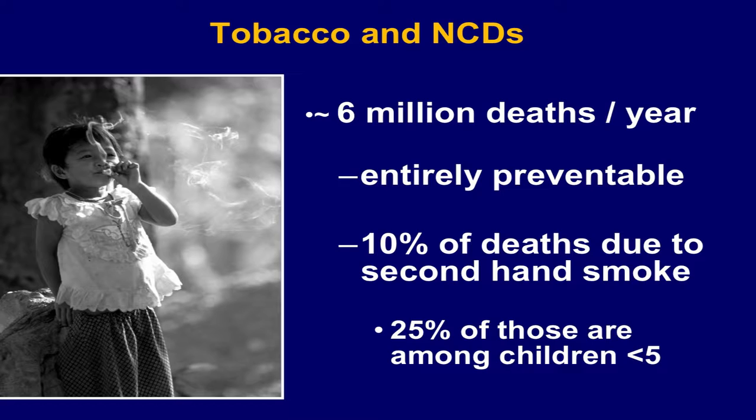Tobacco costs about 6 million deaths a year worldwide. This is entirely preventable. It's estimated that about 10% of these deaths are due to secondhand smoke exposure. About one out of four of those secondhand smoke exposure-related deaths are among children less than five years of age.